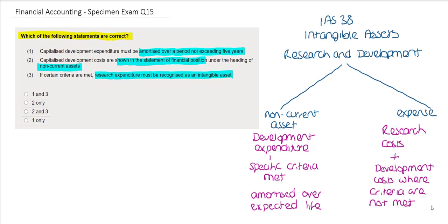Therefore, looking at the statements that we have to choose from, we can see that the first one, that capitalised development expenditure must be amortised over a period not exceeding five years, cannot possibly be accurate because if our development expenditure needs to be amortised over its expected life, this could be longer than that time.